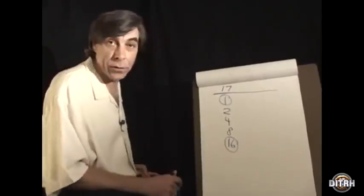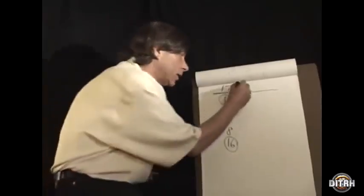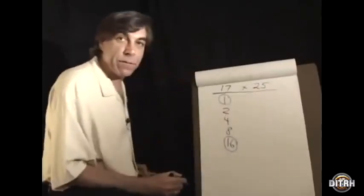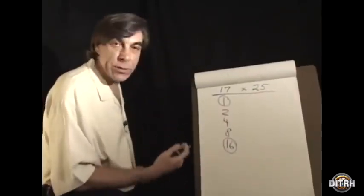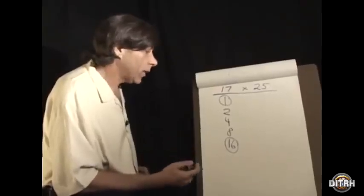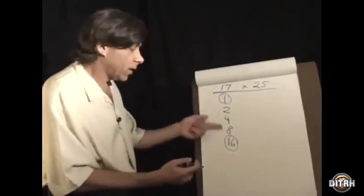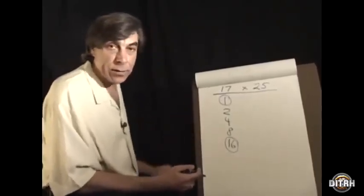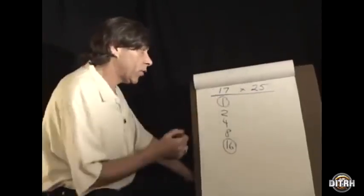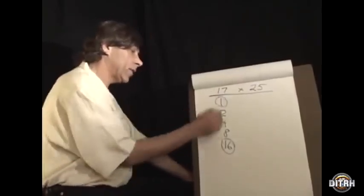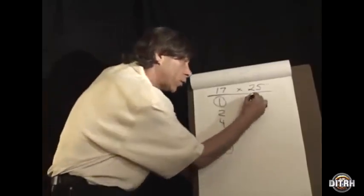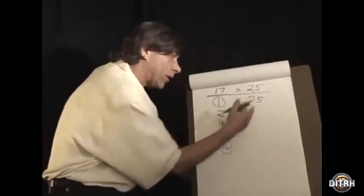So if I wanted to multiply two numbers, let's say we wanted to multiply seventeen by twenty-five. In order to multiply the way the Egyptians did and the way the computers do, all you have to know is how to double numbers and how to add two numbers together. No multiplication table needs to be memorized.